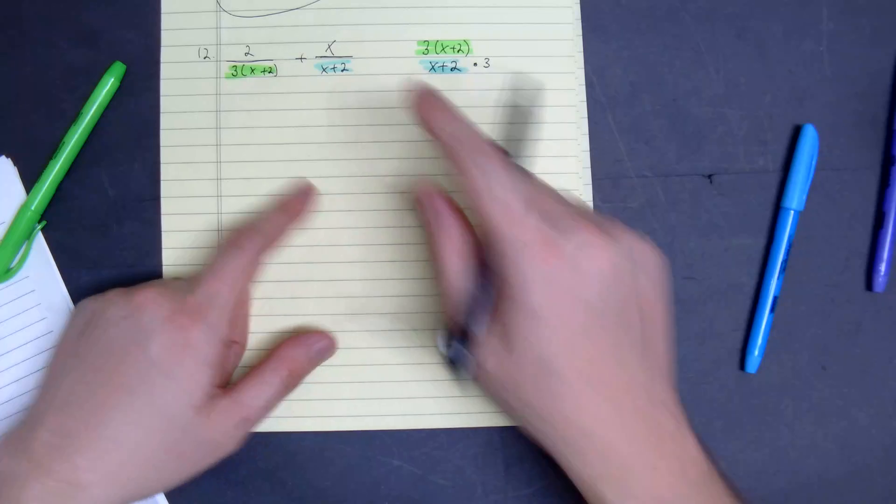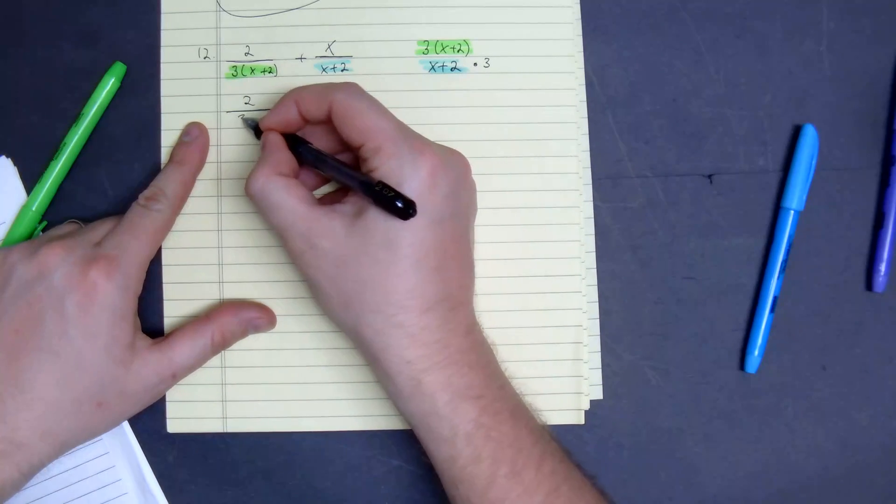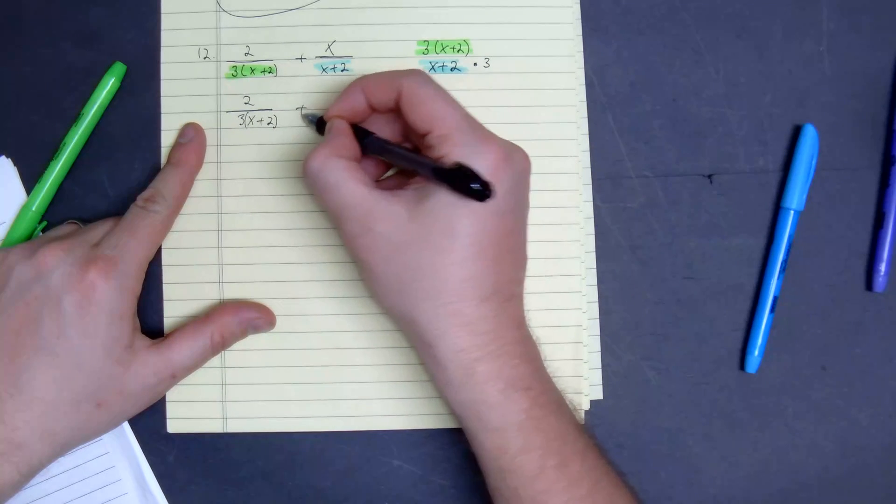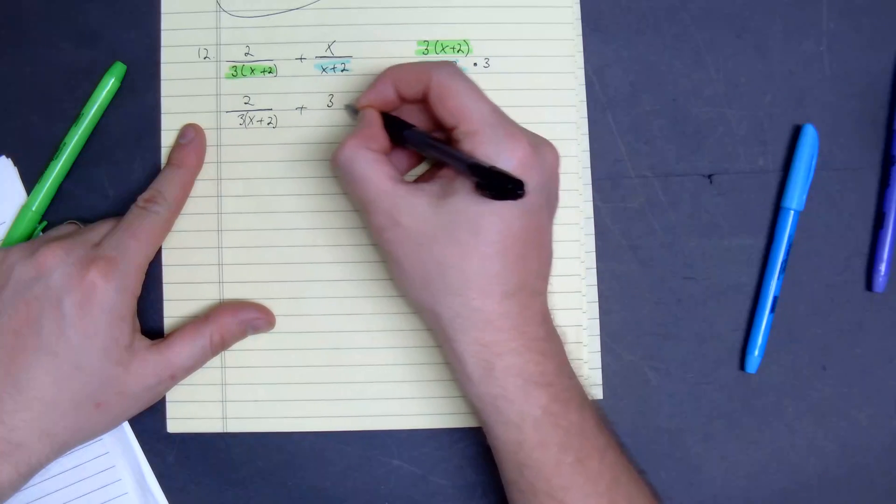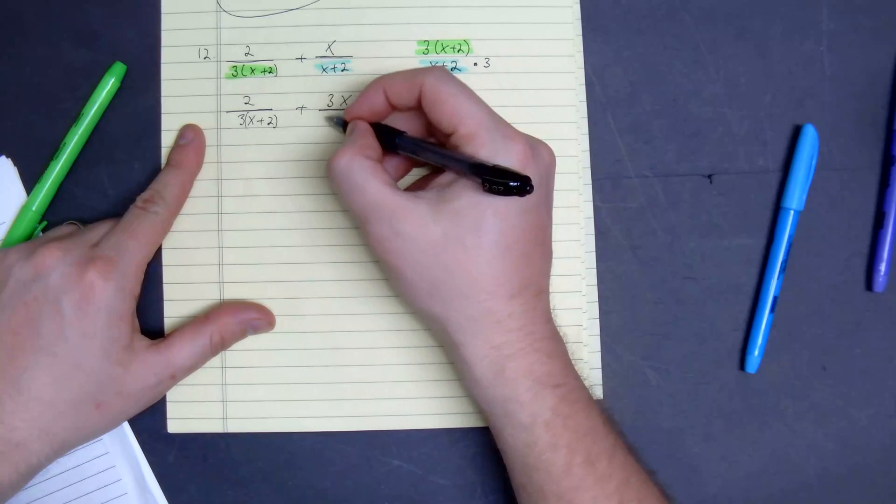We need to multiply this by 3, x plus 2, so we get 2 divided by 3 times x plus 2, plus, we need to multiply the top by 3 and then also the quantity of x plus 2 by 3.